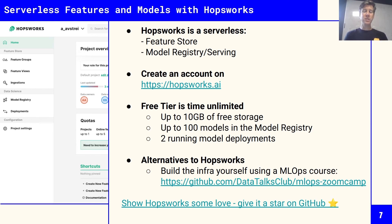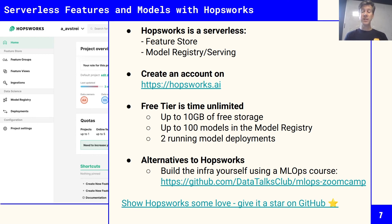Alternatives to Hopsworks are more limited than those for GitHub Actions — there aren't other serverless feature stores available today. For model registries, Weights & Biases is a possible option, or you could build the infrastructure yourself. There's a good MLOps course from Data Talks Club that shows you how to build the infrastructure needed to manage data and models. Hopsworks is open source, so you can give it a star on GitHub.